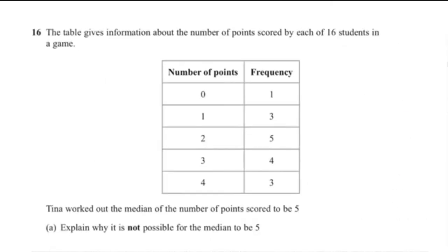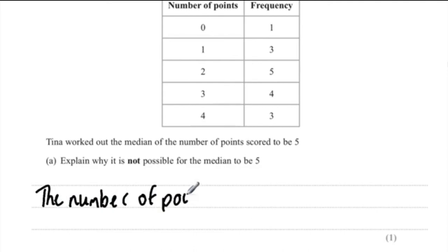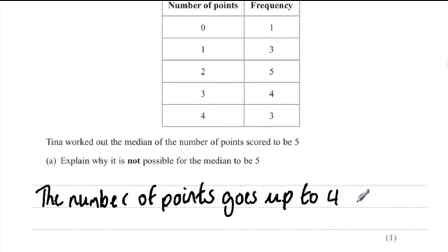Question 16A: Tina worked out the median of points scored by 16 students to be 5. Explain why it is not possible for the median to be 5. The number of points only goes up to 4 (0, 1, 2, 3, 4), so 5 does not exist in the data.